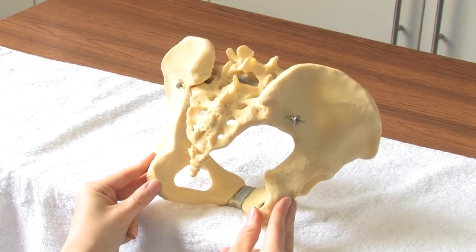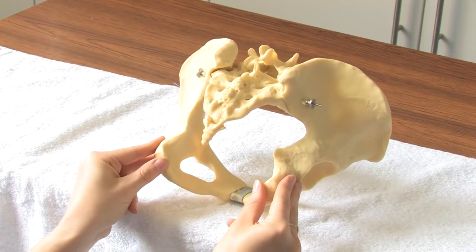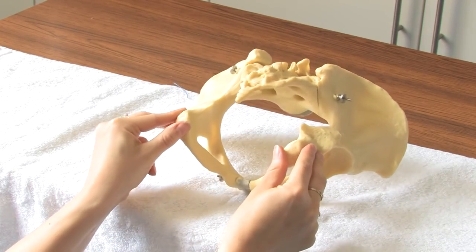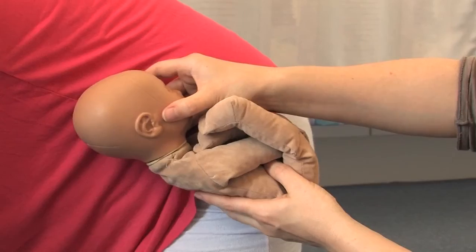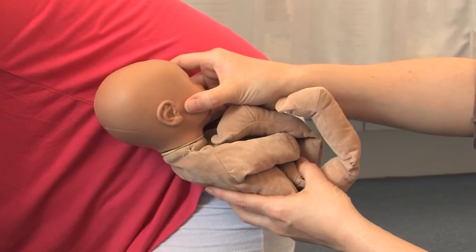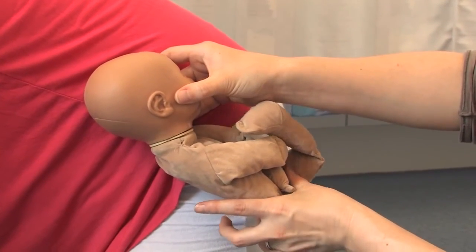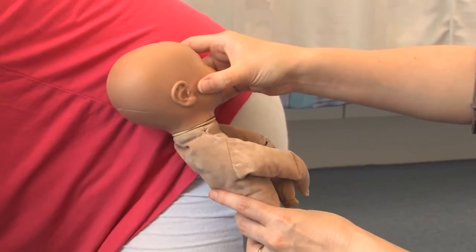This is now shown using the pelvic model. Now watch the breech mechanism with the woman in the first position and then the second position as she lowers to the floor.